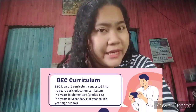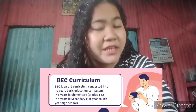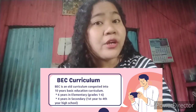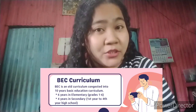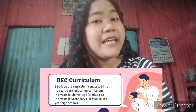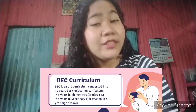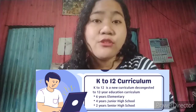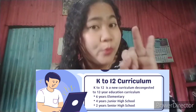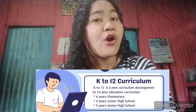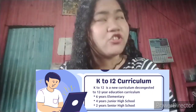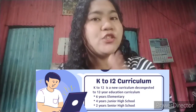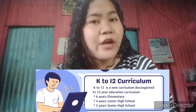First, in BEC, education is congested into only 10 years — 6 years in elementary level and 4 years in high school. On the other hand, in K-12 Curriculum, it is decongested into 12 years, which means 6 years in elementary education, 4 years in junior high school, and an additional 2 years in senior high school.